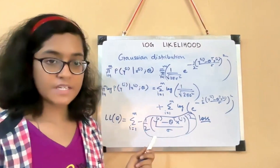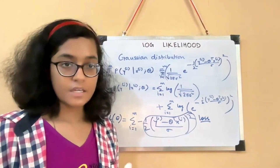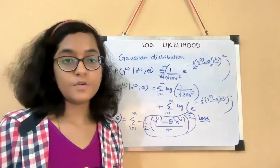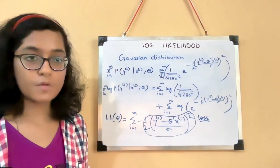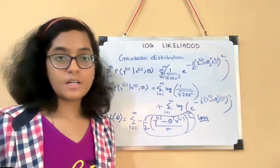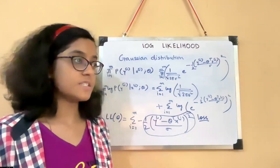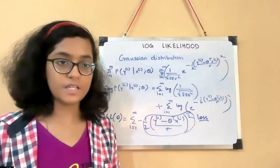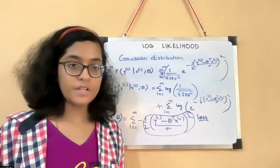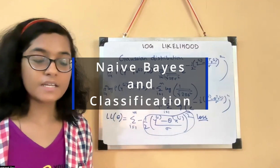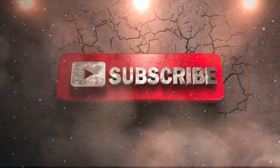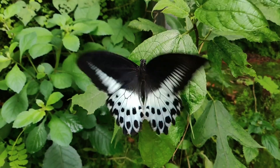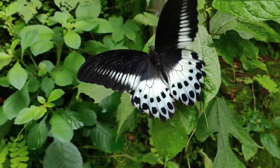In future videos, I'll show this in naive Bayes and other classification algorithms — you will see that log likelihood is always the key quantity and it's always easiest to work with. I hope this was helpful, please stay tuned for future videos. Thank you.